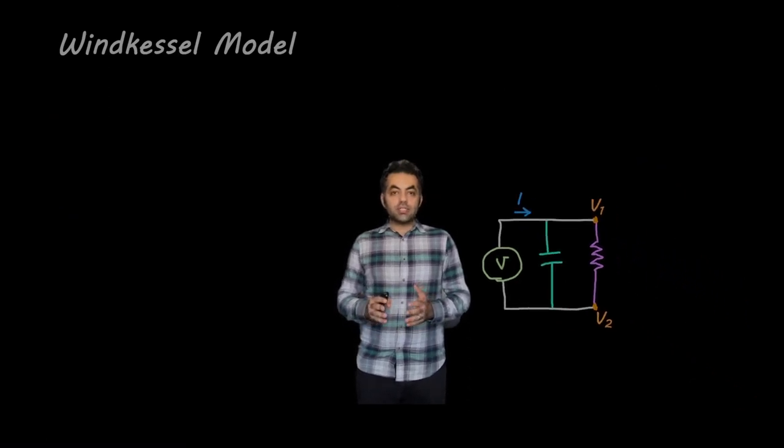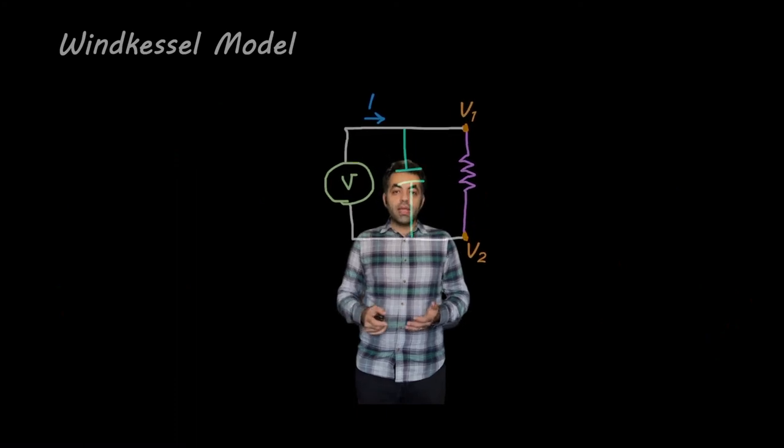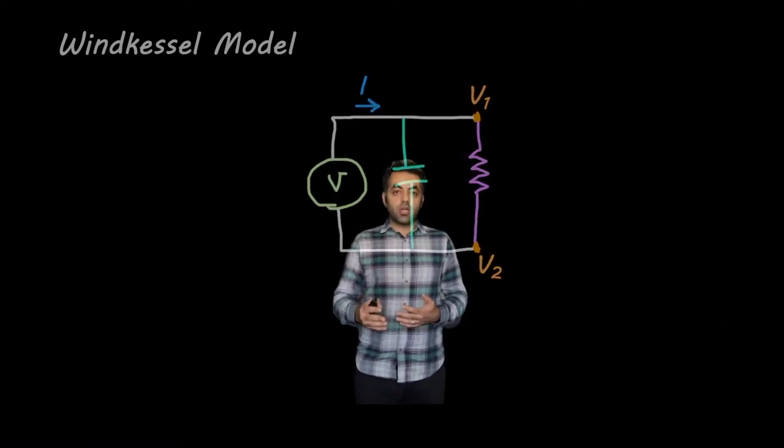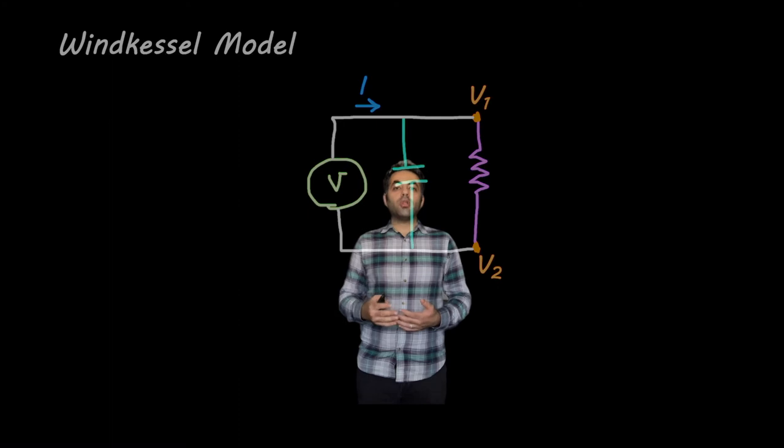This electrical circuit is called a Windkessel model. And we can use this model in order to simulate blood flow behavior inside our cardiovascular system.